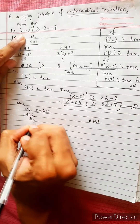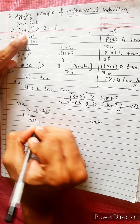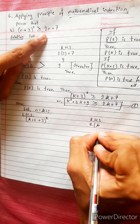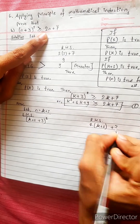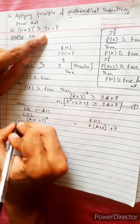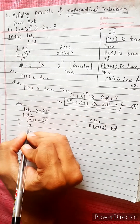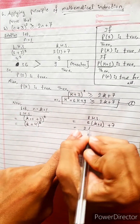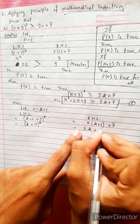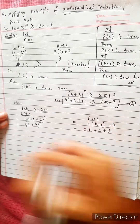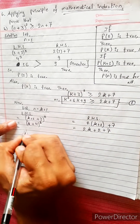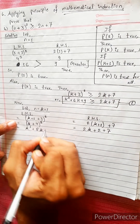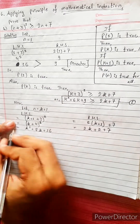For LHS: n becomes k plus 1 plus 3. For RHS: 2 times k plus 1 plus 7. This simplifies to k plus 4 quantity squared on the LHS, and 2k plus 2 plus 7 on the RHS.